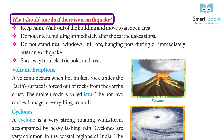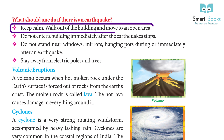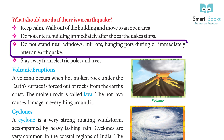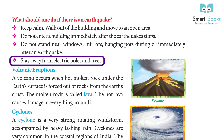What should one do if there is an earthquake? Keep calm. Walk out of the building and move to an open area. Do not enter a building immediately after the earthquake stops. Do not stand near windows, mirrors, or hanging pots during or immediately after an earthquake. Stay away from electric poles and trees.